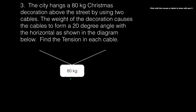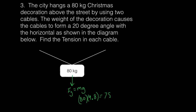A good place to start is drawing in all the forces you know. The force of gravity, or the weight, equals mass times acceleration. The mass is 80 kg times 9.8, which equals 784 newtons. We can use Newton's first law again because this Christmas decoration is not moving up and down, so all forces down — 784 newtons — must equal all forces up: 784 newtons.